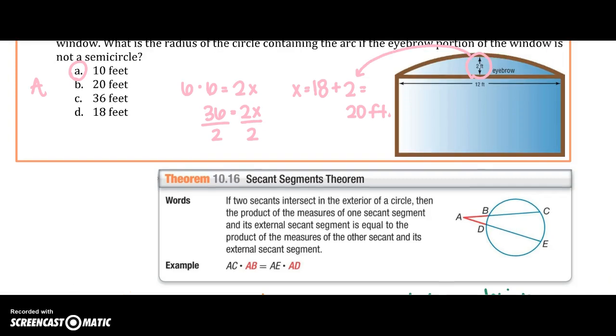we have a secant segment theorem. And so, we are dealing with two secants in this picture. So, if two secants intersect in the exterior of the circle, remember, they intersect at point A, then the product of the measures of one secant segment and its external segment. So, the secant segment and its external segment is equal to the product of the measures of the other secant segment and its external segment.